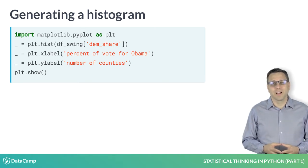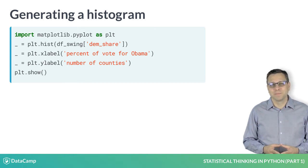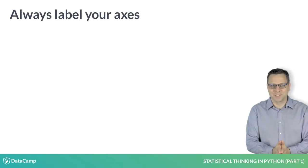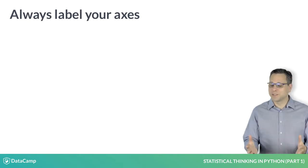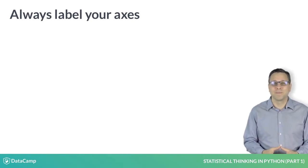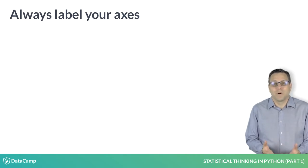After creating the histogram, we label the axes. Always label your axes for histograms or any other kind of plot — otherwise, no one can know what it is that you are plotting.